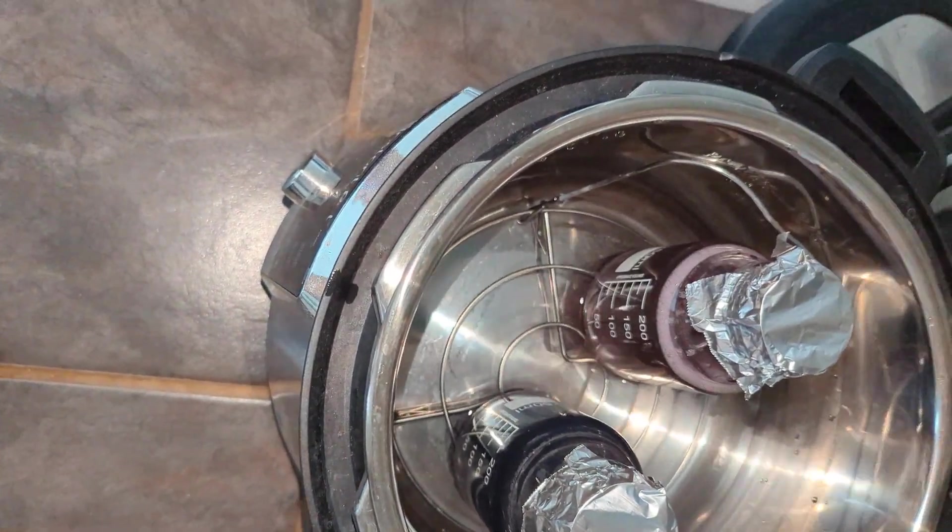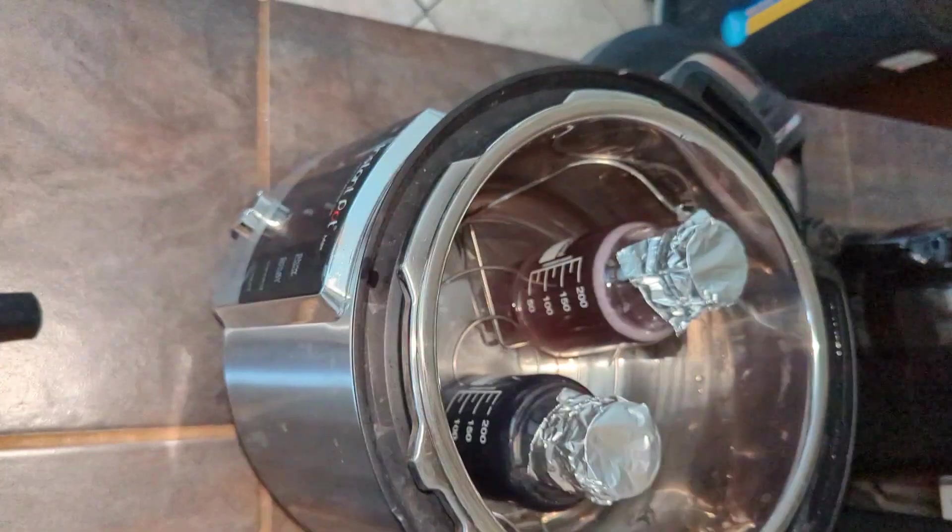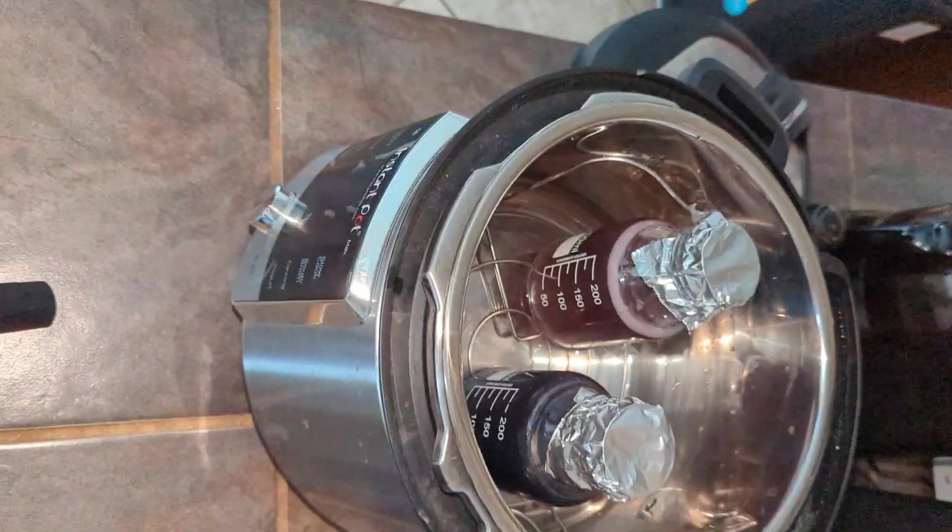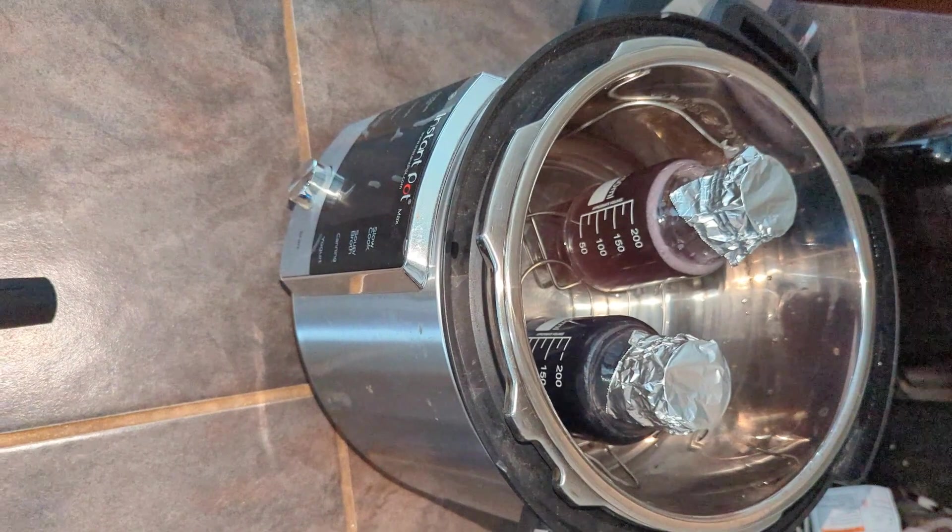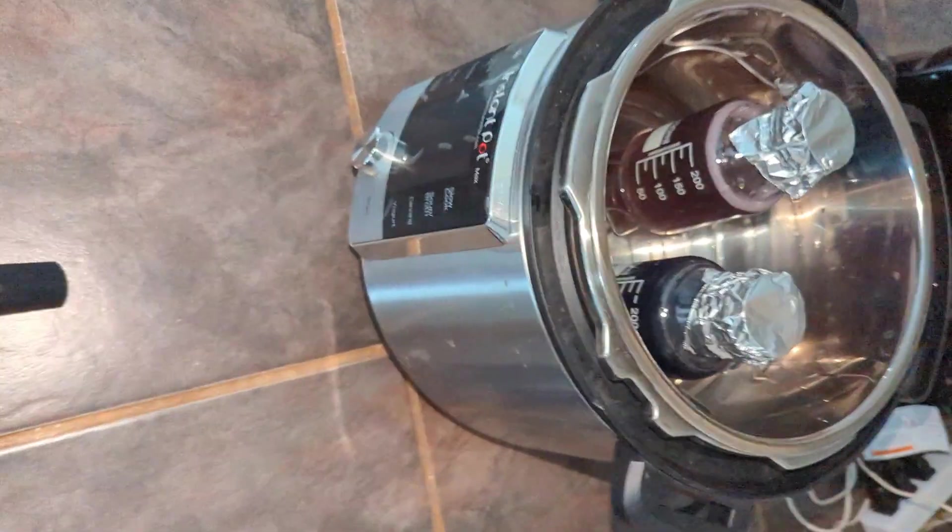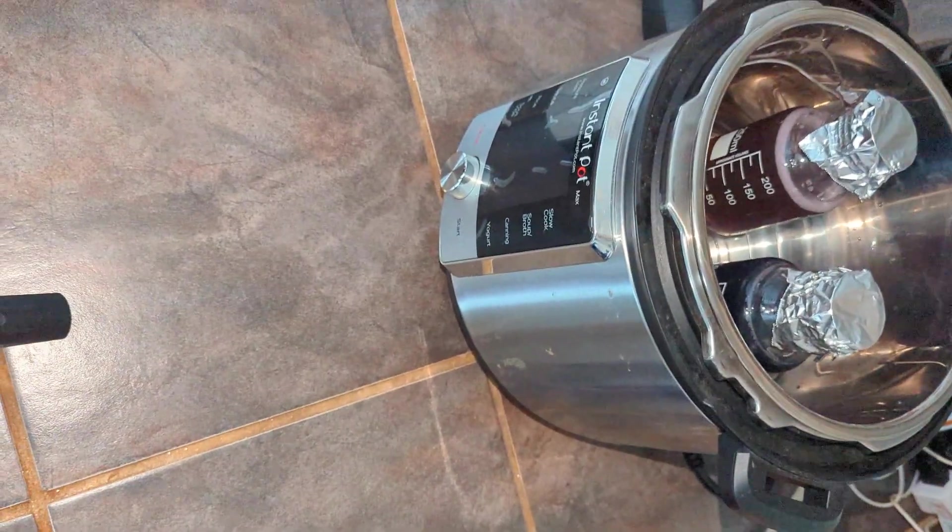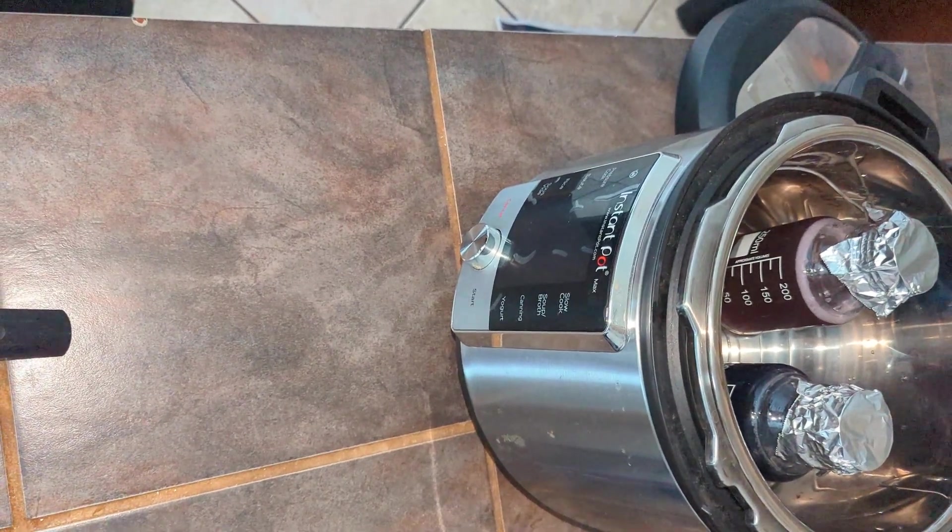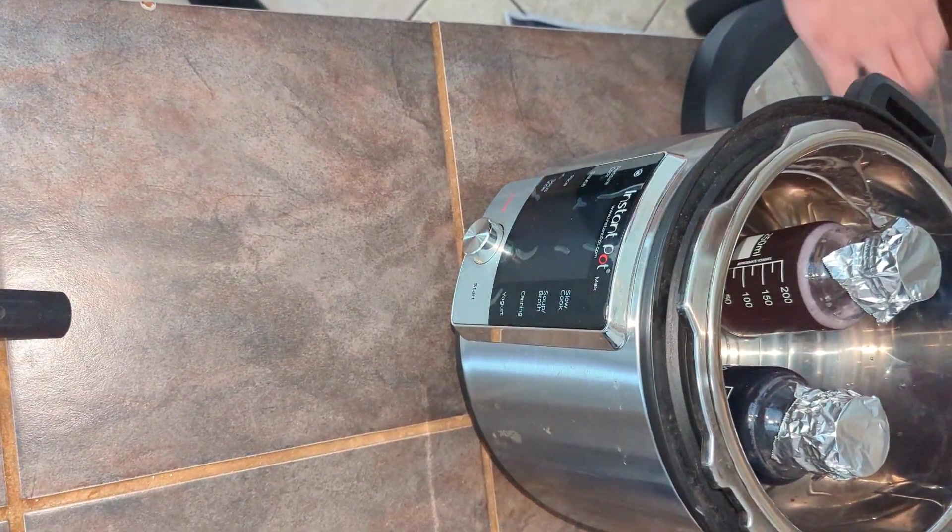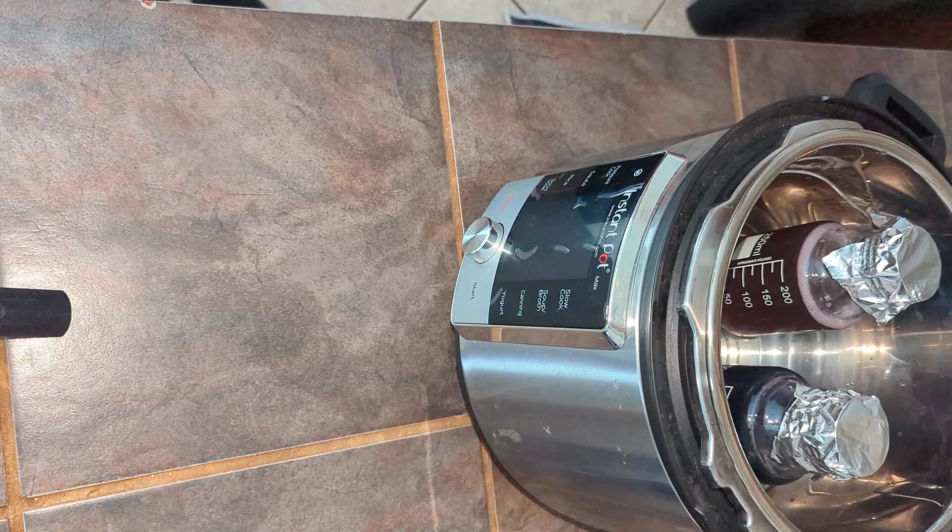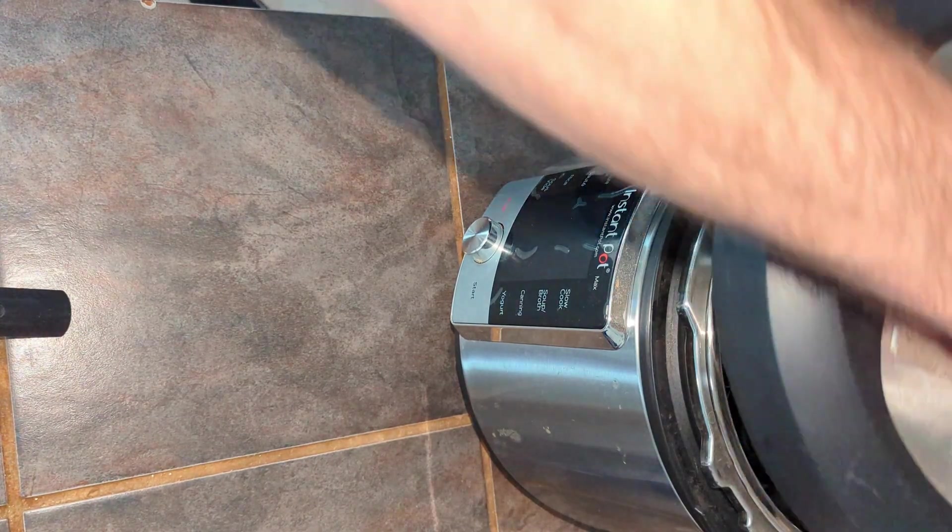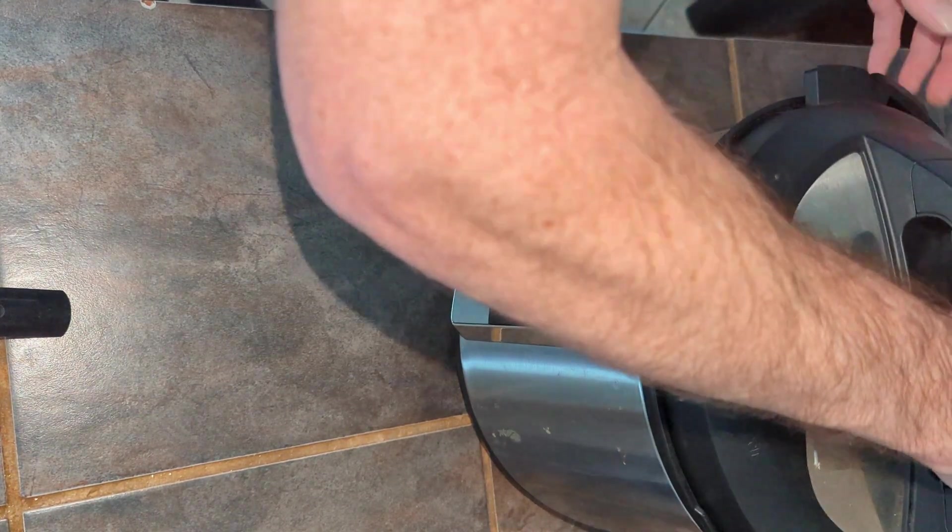Once it's done cooking, we want to allow it to cool off. Pouring agar when it's too hot can create condensation in your petri dishes. We want to allow it to cool for 30 minutes to an hour. Once the instant pot or PC is safe to open, open it and check the bottles with your hands. Be careful not to spill them or burn yourself. When you can touch the bottles without it burning, they're ready to pour.